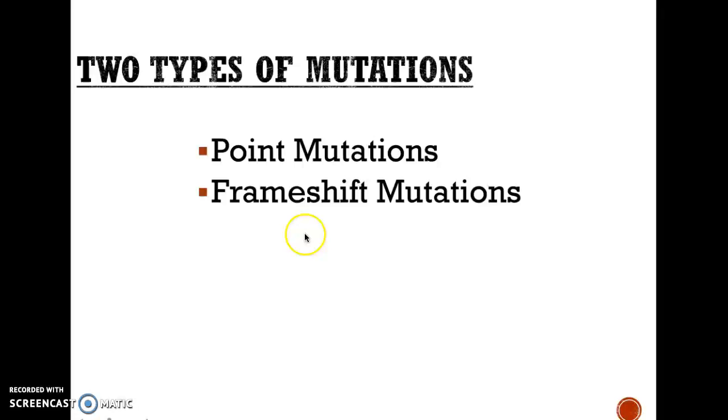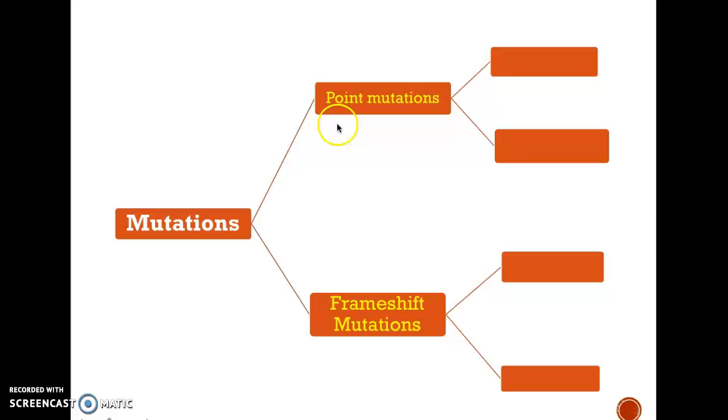Rarely, in some rare occasions, mutations can actually be beneficial to a species because they can be a source of genetic variability — causing more variation in a species, like many different colors of eyes or different colors of hair. Those are all mutations that have happened over time, yet they just cause variability rather than a negative impact. There are going to be two types of mutations: point mutation and frameshift mutation.